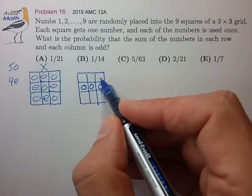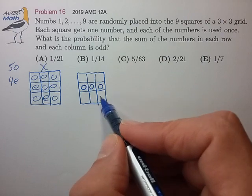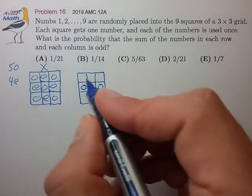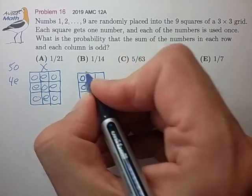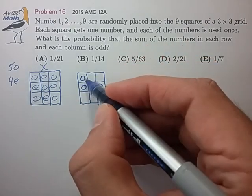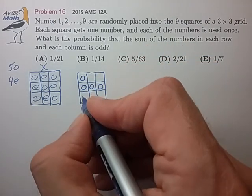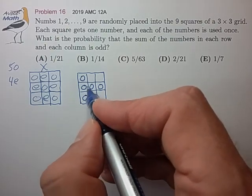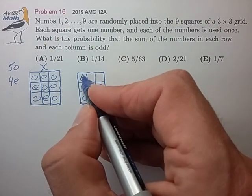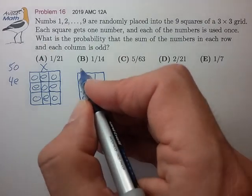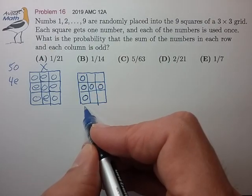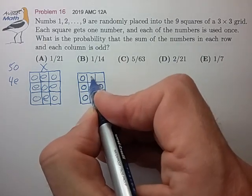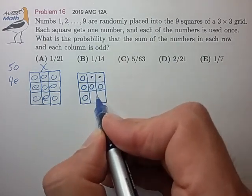Now let's see where we can place the fourth odd number. The fourth odd number can be anywhere, so let's just place it here for argument's sake. But once we place it here, the fifth odd number has to be here to create an odd sum on this column. So that pretty much sets the pattern — the rest of the squares are going to be even numbers.